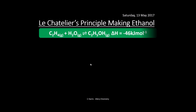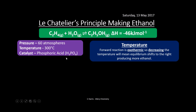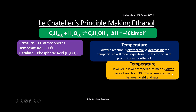Let's look at making ethanol: ethene (C₂H₄) plus water makes ethanol. The forward reaction is exothermic (negative delta H), conditions are 60 atmospheres pressure, 300°C, with phosphoric acid as catalyst. Decreasing temperature shifts equilibrium right, producing more ethanol. However, lower temperature means a lower rate of reaction, so a compromise of 300°C is used — balancing yield and rate.